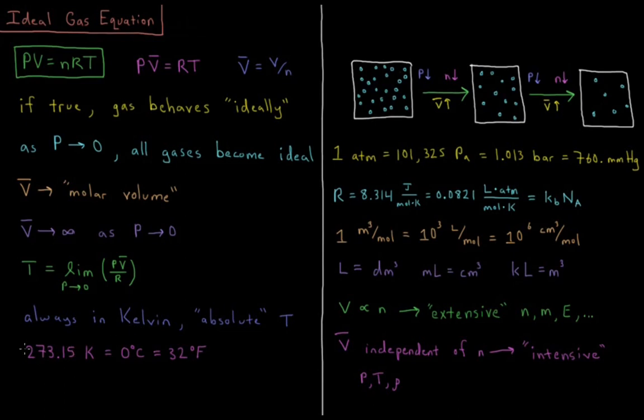To remind ourselves, 273.15 Kelvin is equal to zero degrees Celsius, and one Kelvin is equal to one degree Celsius as far as change in temperature.